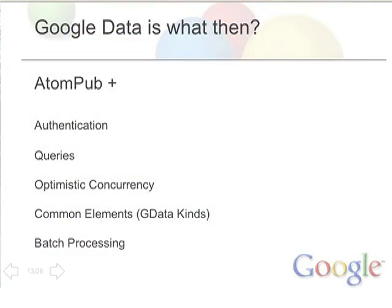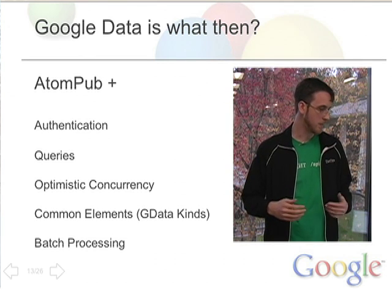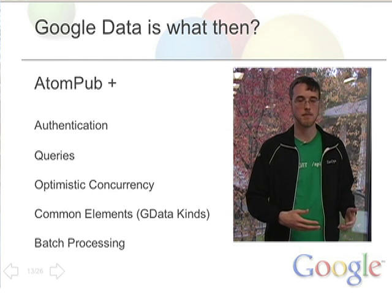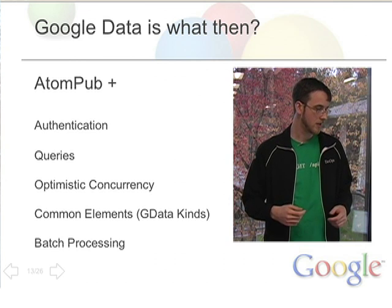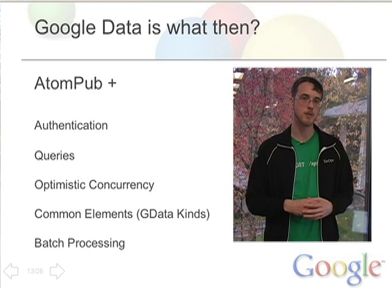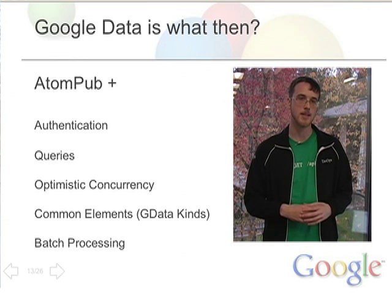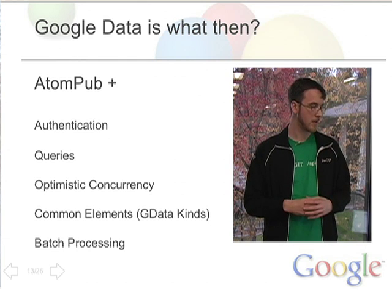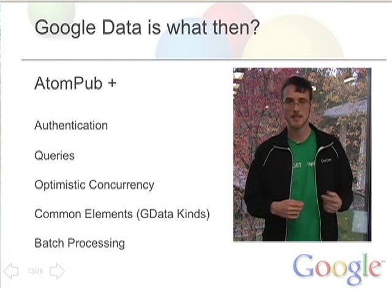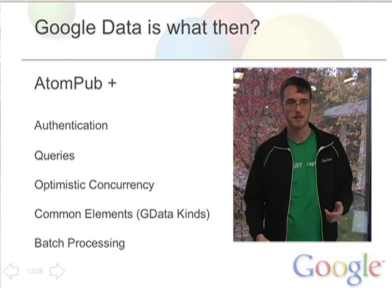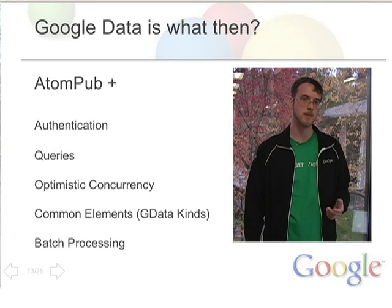Once we have this XML that fits nicely into the Atom model — since Atom allows you to extend its XML — what else might you need? There are things like a query language and authentication that have been added to AtomPub as part of Google Data. Google Data fills in the gaps between what AtomPub accomplishes and what we'd like to accomplish using these as APIs. This includes authentication to tie into Google accounts, ways of restricting content in feeds, handling conflicts when two people try to add the same information simultaneously, common elements to express data, and extras like batch processing and media support.